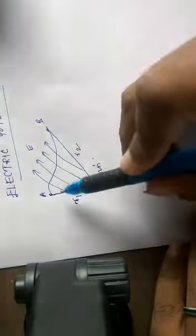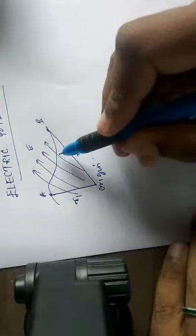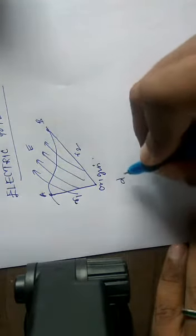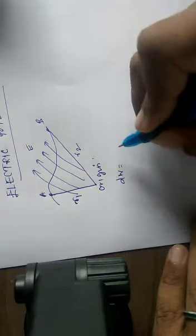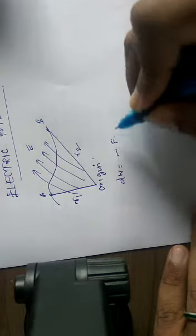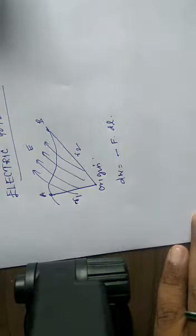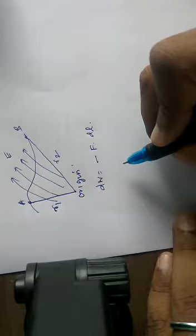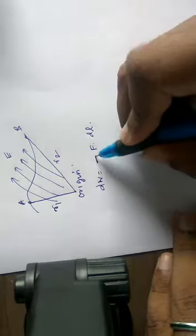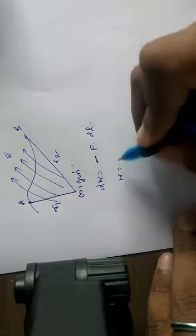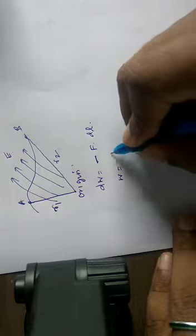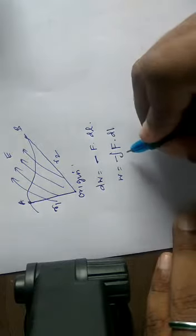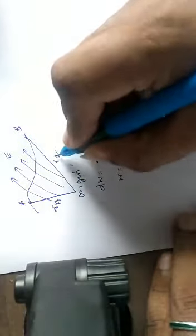So I want to move a charge from A to B in the electric field. We need to do some work. What is the work done to move the charge from A to B? It equals minus — we have to apply force times distance. The negative sign is because the force is applied externally to move the charge from A to B. So W is equal to the integral: W = -∫ F · dl from r_a to r_b.